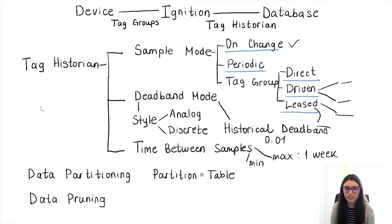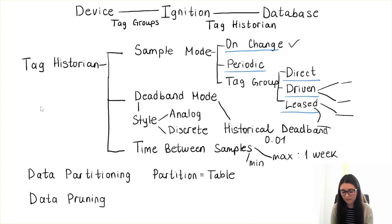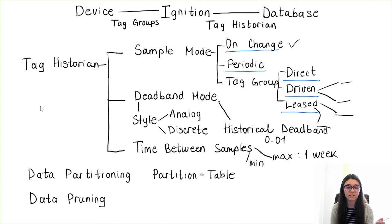Data pruning means deleting data after a certain period of time. At first this may not seem logical since we store historical data to keep it, but it can make sense to only keep raw data for the last three months and make aggregations from older data. So we can prune or delete data older than three months. That will be it for today — thank you for your time and attention.